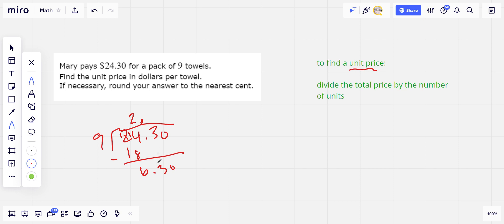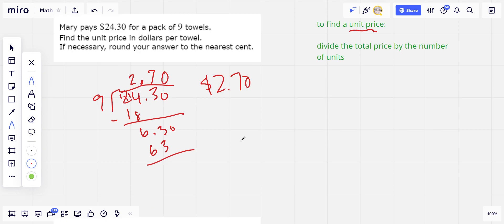I'm going to put the decimal point up here, and 9s in 63. That is 7. Seven times 9 is 63. There we go. So we'll put an extra zero there. It's $2.70 per towel. And so if you had another pack of towels that had a different number, you could figure out that unit price and compare.